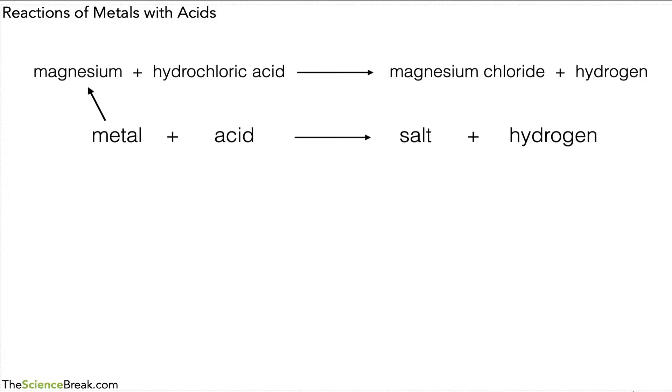In the equation above, the metal is magnesium. The acid is hydrochloric acid. The type of salt we have is called magnesium chloride, and there at the end we have hydrogen gas being given off.